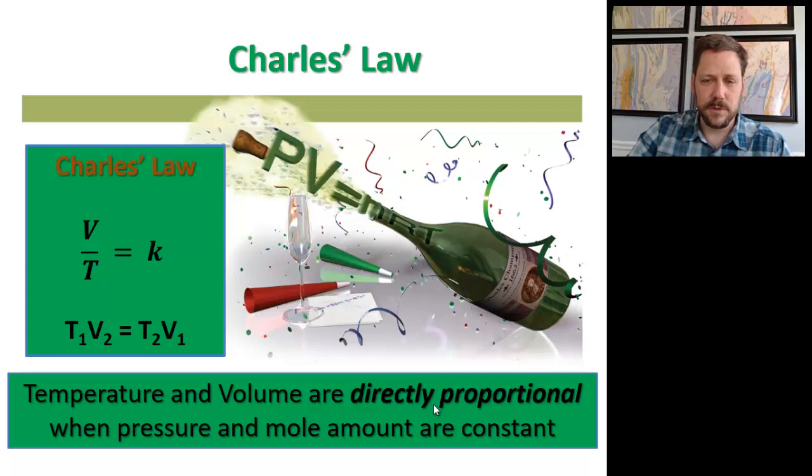So the formula that I'm going to introduce looks a little bit different. Instead of P1V1 equals P2V2, it's T1V2 equals T2V1. And we can rearrange the equation as well to show that it's the ratio of volume and temperature which is constant. Unlike in Boyle's law, where it's the product of pressure and volume, which is constant.